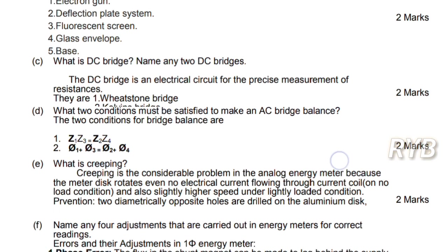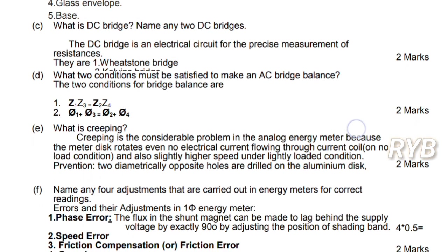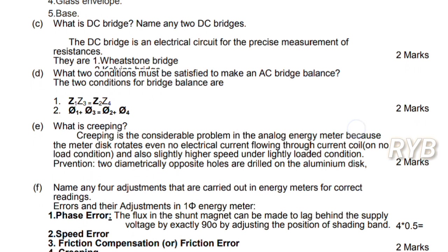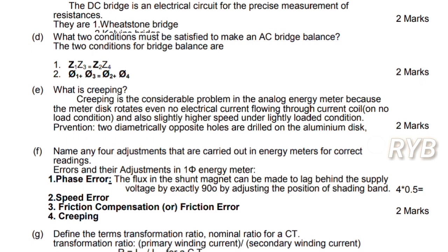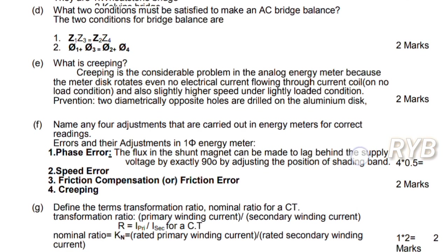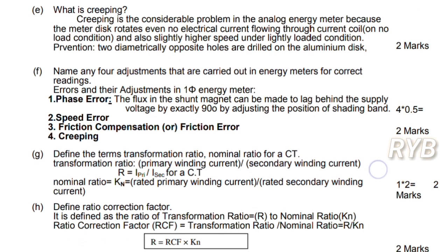Name any four adjustments carried out in an energy meter to correct readings. The errors and corrections include: phase error, speed error, friction compensation error, and others. So many errors can be reduced through these adjustments.